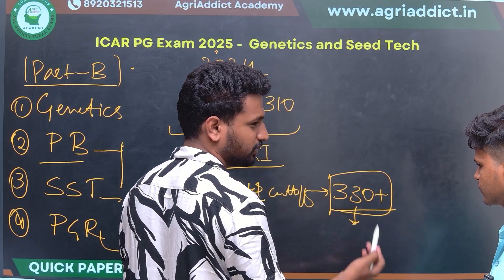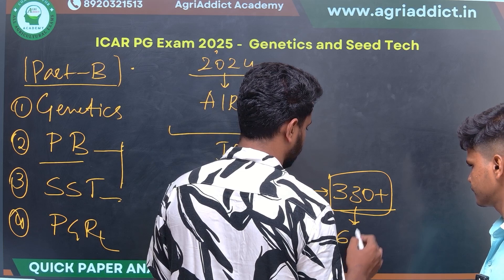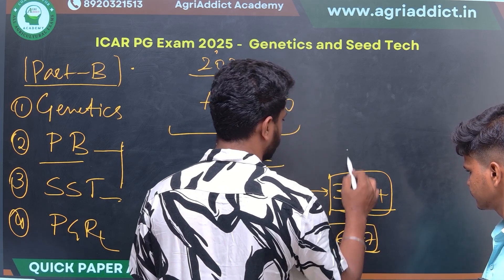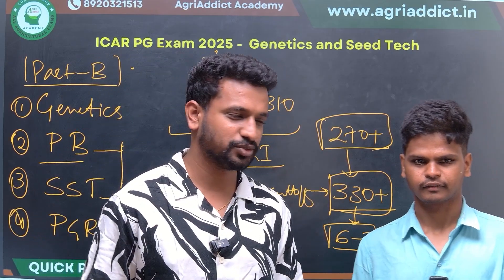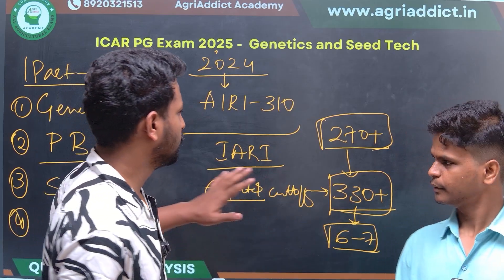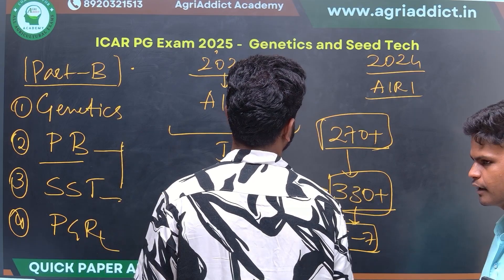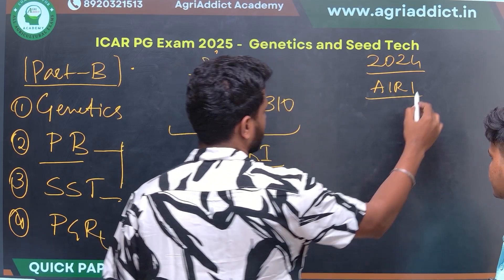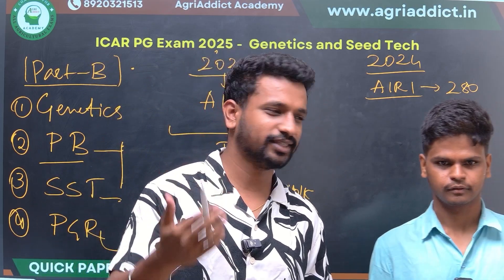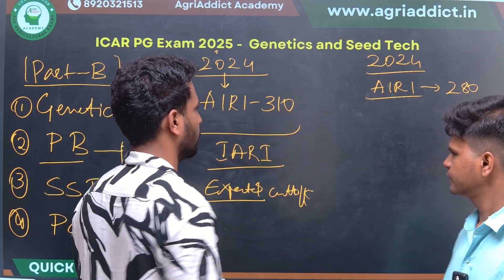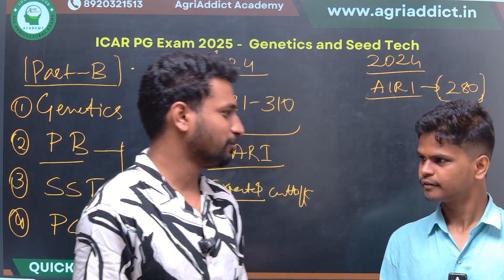For Genetics and Plant Breeding: in the previous year, the first rank holder scored 280 marks. In total, approximately 15 to 16 seats are available for GPB at IARI, with around 7 to 8 seats for the general category. So someone scoring more than 200 has a very good chance of getting into IARI for GPB.